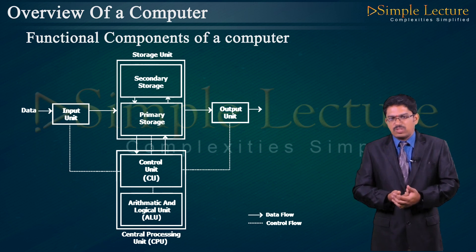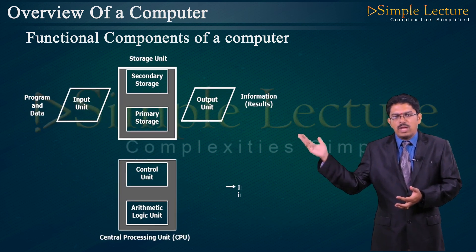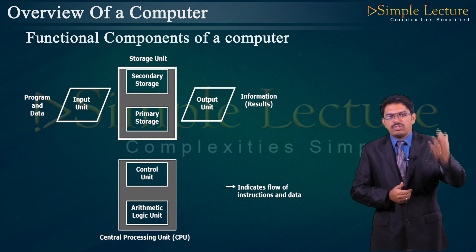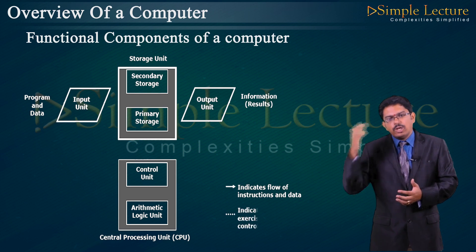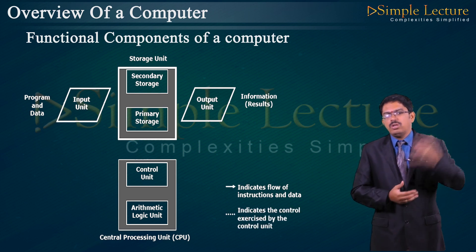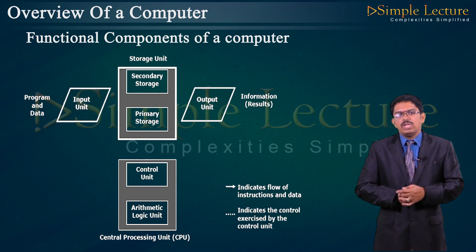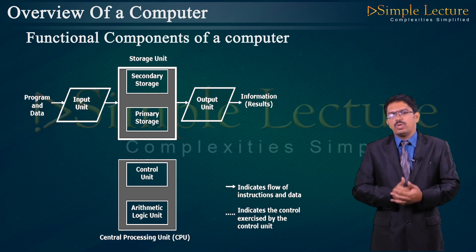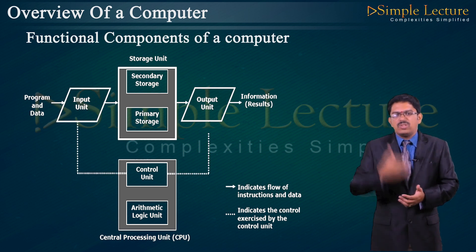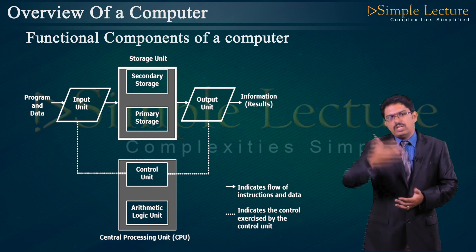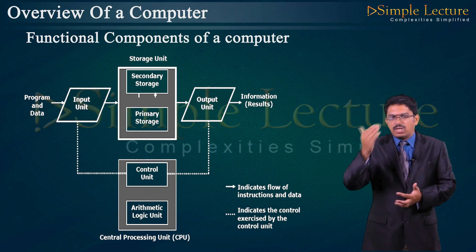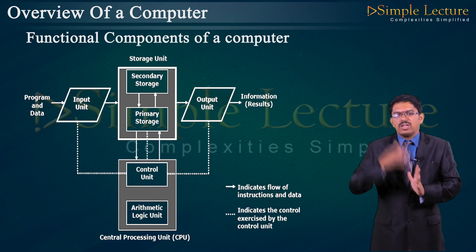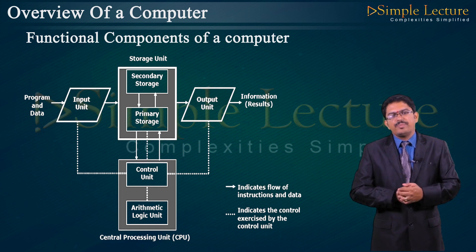Arrow marks indicate the flow of instructions and data, while dotted lines indicate the control exercised by the control unit. Control is transferred from the input unit to the output unit and from all devices — including secondary storage and primary storage — to the CPU, where data can be easily transferred.